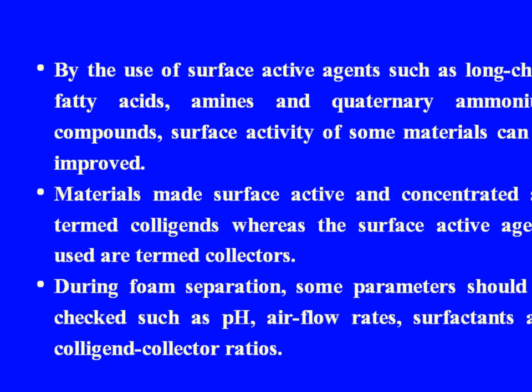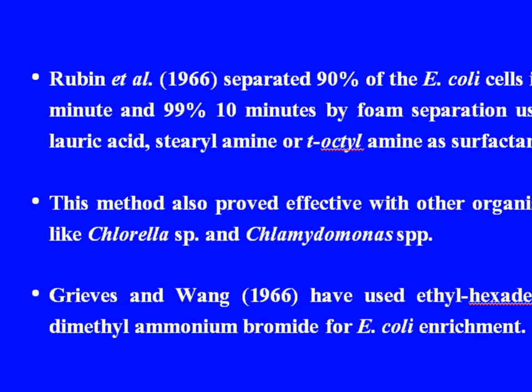By the use of surface active agents such as long-chain fatty acids, amines, and quaternary ammonium compounds, the surface activity of some materials can be improved. Materials made surface active and concentrated are termed cologans, whereas the surface active agents used are termed collectors. During foam separation, some parameters should be checked, such as pH, air flow, surfactants, and colligan-to-collector ratio. Rubin et al. in 1966